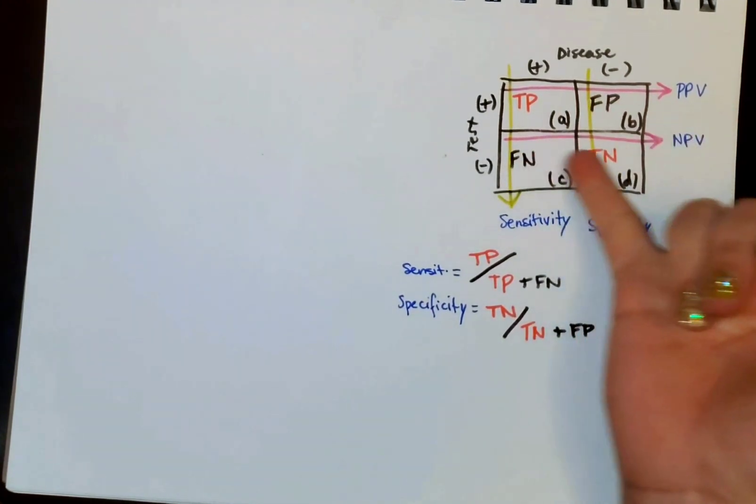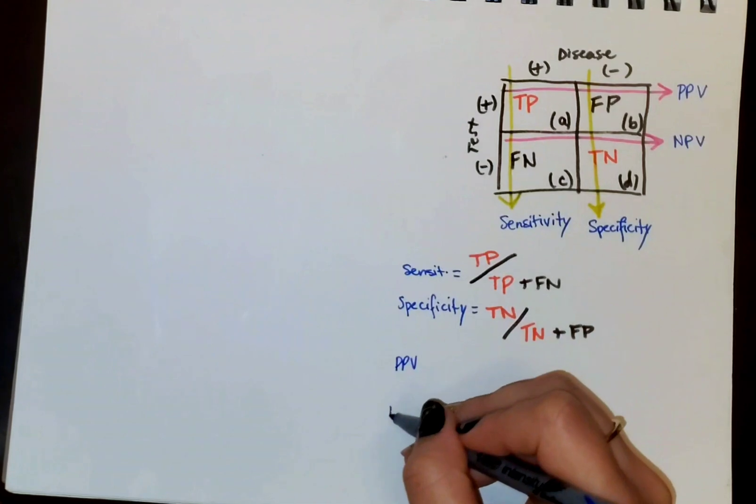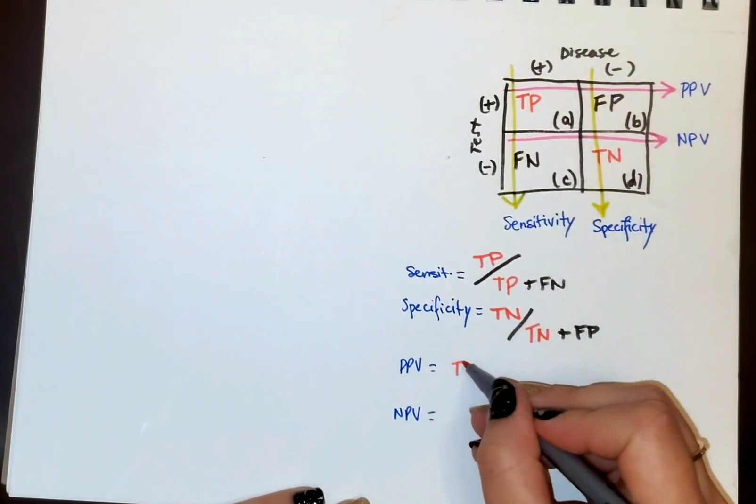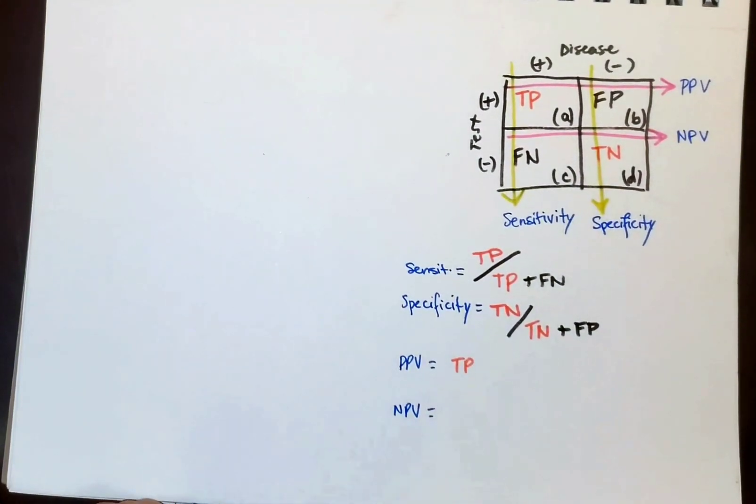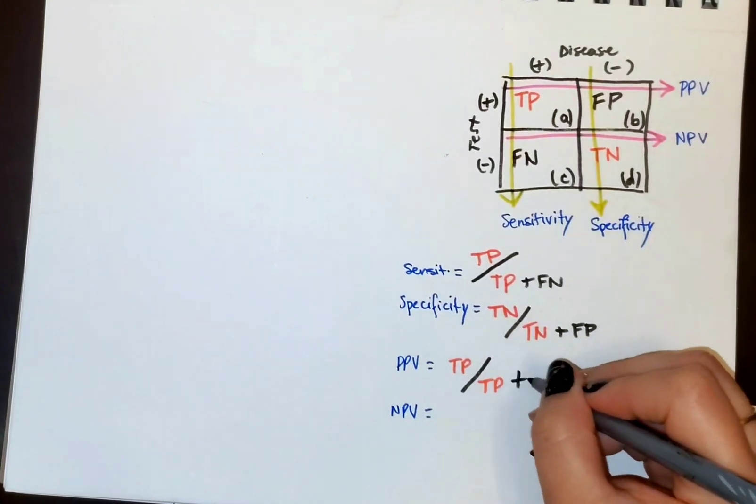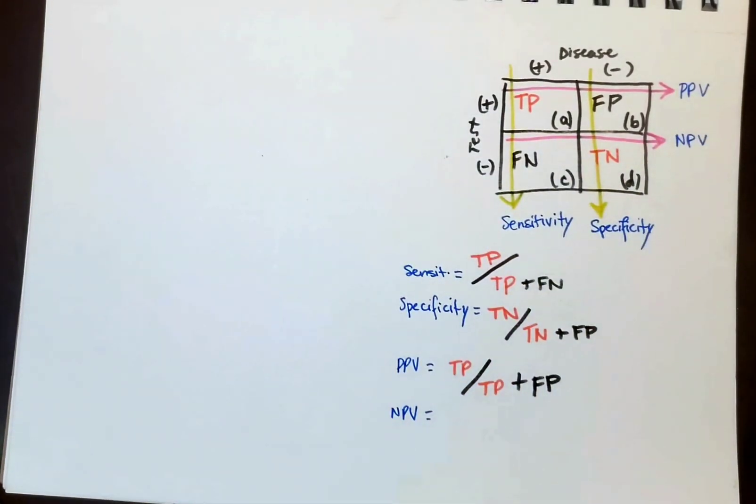Now using the rows, we're going to calculate positive predictive value and negative predictive value. In positive predictive value, we're checking the probability that a person who tested positive actually has the disease. So we're doing rows this time. So we're doing true positive over the sum of true positive plus false positive.